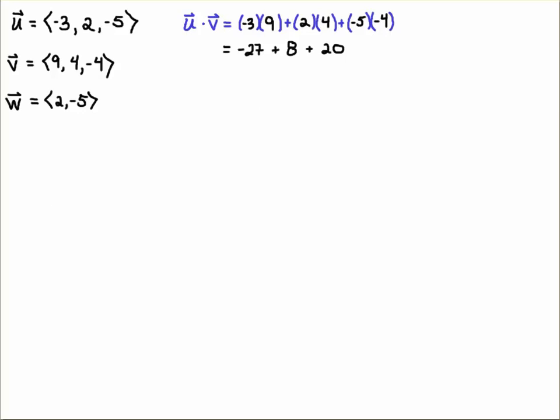And, of course, minus 27 plus 8 plus 20 gives us 1. Because that's 28 minus 27, that's 1. So, u dot v results in a single number. Call that a scalar. Sometimes people call this the scalar product.